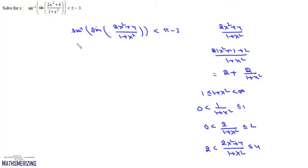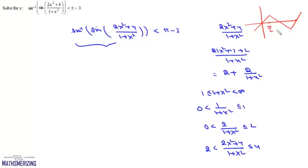We need to find the definition of sin⁻¹(sin x) when x lies between 2 and 4. Drawing the graph of sin⁻¹(sin x): it equals x from −π/2 to +π/2, then decreases. The key points are π/2 and 3π/2. Since 2 > π/2 and 4 < 3π/2, within the interval (2, 4] the function equals −x + π.